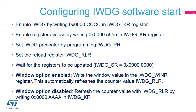The IWDG software start is configured in a few steps. The first step is to write the key register with value 0x0000CCCC, which starts the watchdog. Then remove IWDG register protection by writing 0x00005555 to unlock the key. Set the IWDG prescaler in the IWDG PR register by selecting the prescaler divider feeding the counter clock. Write the reload register, IWDG RLR, to define the value to be loaded in the watchdog counter. After accessing the previous registers, it is necessary to wait for the IWDG SR bits to be reset in order to confirm that the registers have been updated.